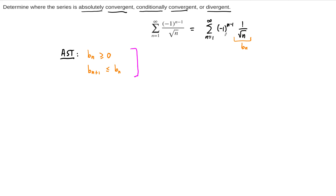Let's check. b sub n is just 1 over square root of n. Since n starts at 1 and works its way up to infinity, n is always positive, so it doesn't require really any work at all to show that this is a positive term. b sub n equal to 1 over root n will always be positive.